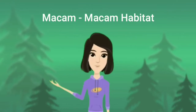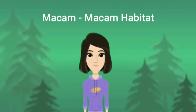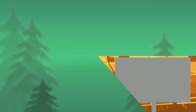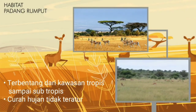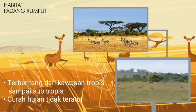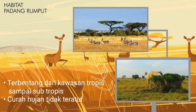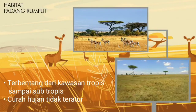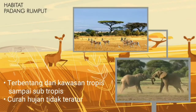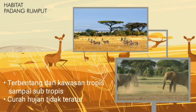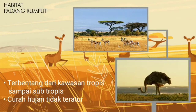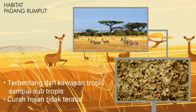Selanjutnya, ada macam-macam habitat yang dibagi menjadi 8 daerah. Yang pertama, ada daerah habitat padang rumput. Habitat padang rumput terbentang dari kawasan tropis sampai dengan kawasan subtropis. Di daerah ini curah hujannya tidak teratur, sehingga menyebabkan tumbuhan sulit mendapatkan air, dan hanya rumput saja yang bisa bertahan hidup.